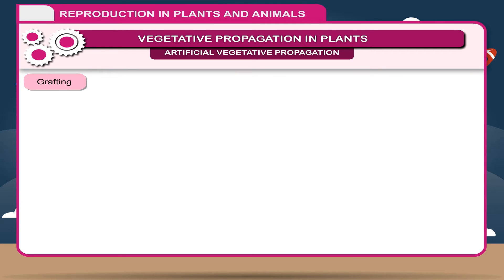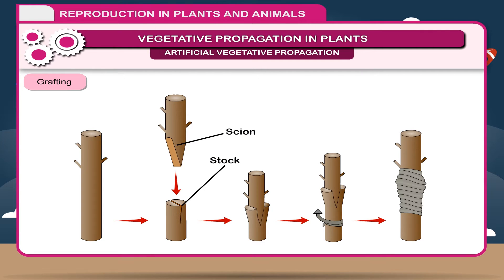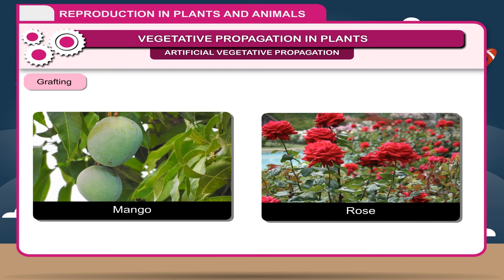Grafting. A freshly cut section of stem with buds, called a scion, is joined to another plant called the stalk. The scion is securely attached to the stalk and the tissues of the two plants grow into each other, forming a single plant. The scion produces stems, leaves and flowers, while the stalk provides the root system. This method combines the qualities of one plant with another. For example, mango, rose, etc.